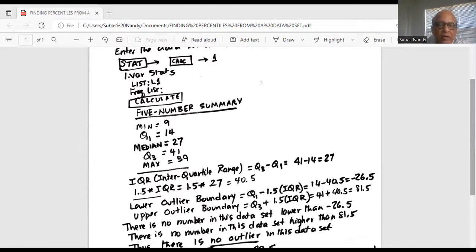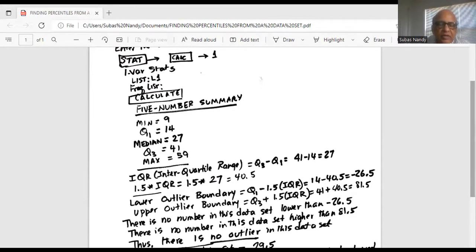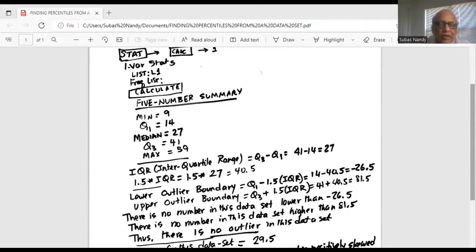These five numbers make up the five-number summary. Now we want to determine whether there is any outlier in this data set. In order to do that, we have to calculate the interquartile range IQR, which is Q3 minus Q1.